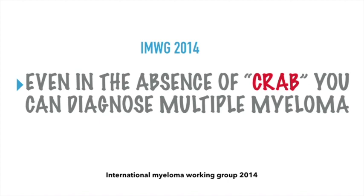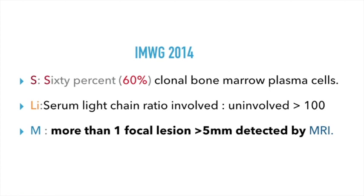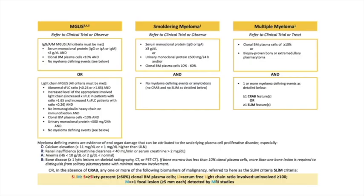The IMWG in 2014 recommended that even in the absence of CRAB, you can still diagnose multiple myeloma using SLiM. S stands for 60% or more clonal bone marrow plasma cells. Li is a serum free light chain ratio of involved to uninvolved greater than 100, if the involved serum free light chain is more than 10 mg/dL. M stands for more than one focal lesion of more than 5 mm detected by MRI. The presence of any one of these diagnostic markers with clonal bone marrow plasma cells more than 10%, or biopsy-proven bony or extramedullary plasmacytoma, even in the absence of CRAB features, is now considered sufficient to diagnose multiple myeloma.